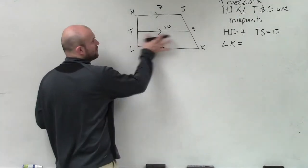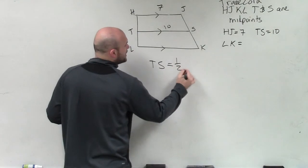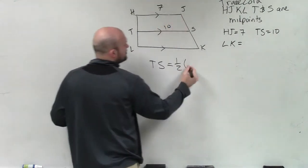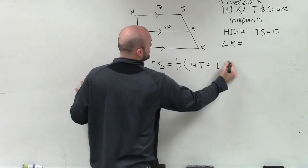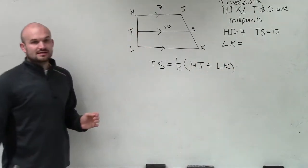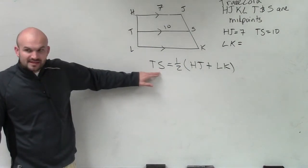And remember, mid-segment formula said the length of TS is equal to 1 half the sum of your two bases, HJ plus LK, right? That was in your notes last class period, correct? That was how to find the length of your mid-segment.